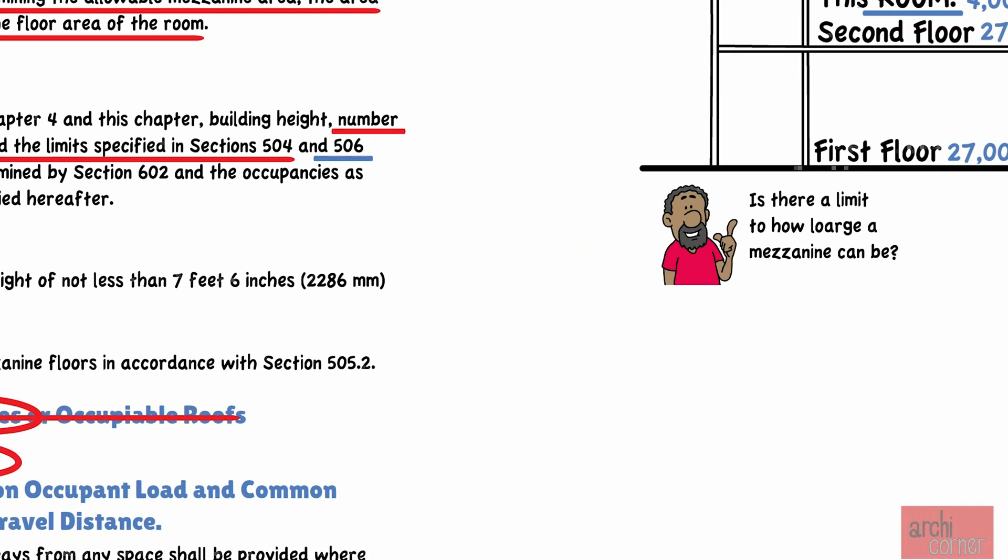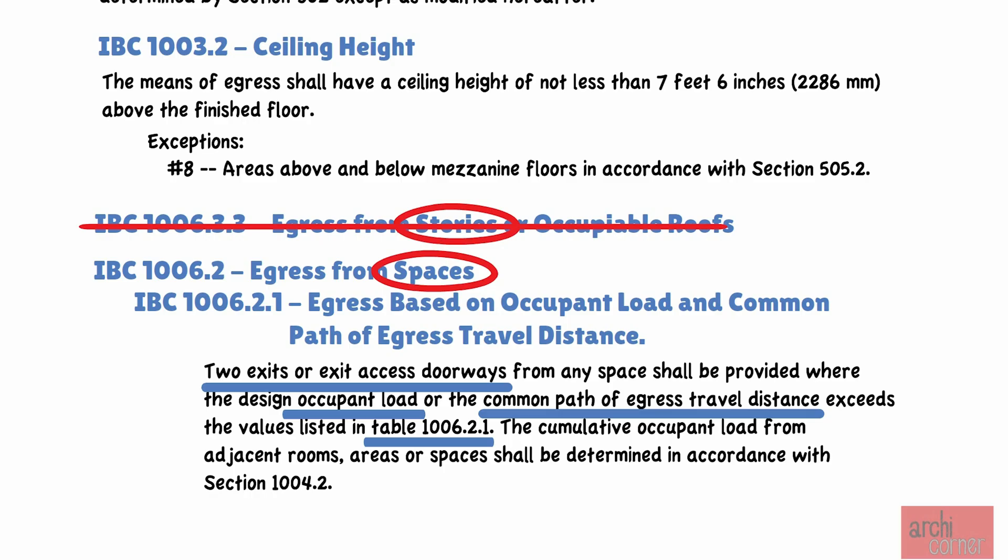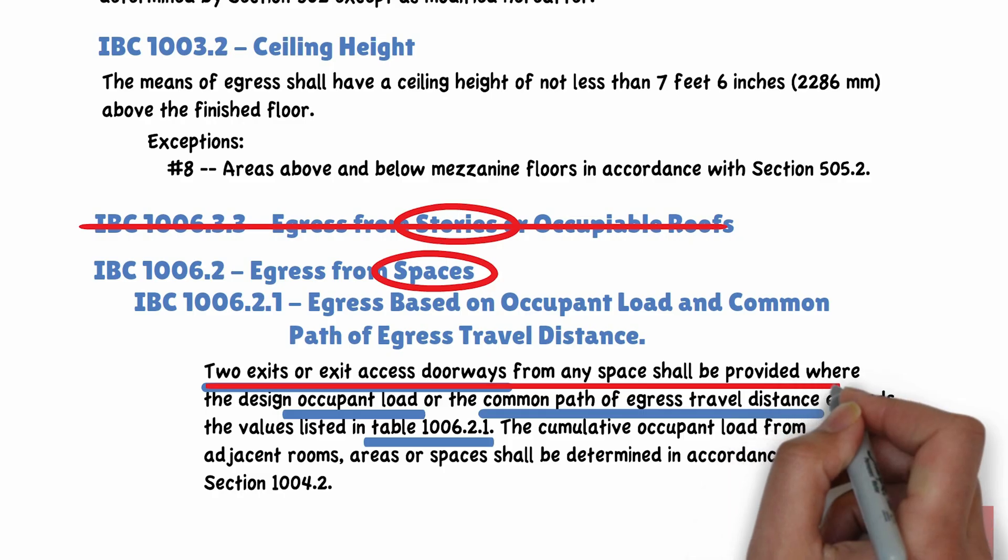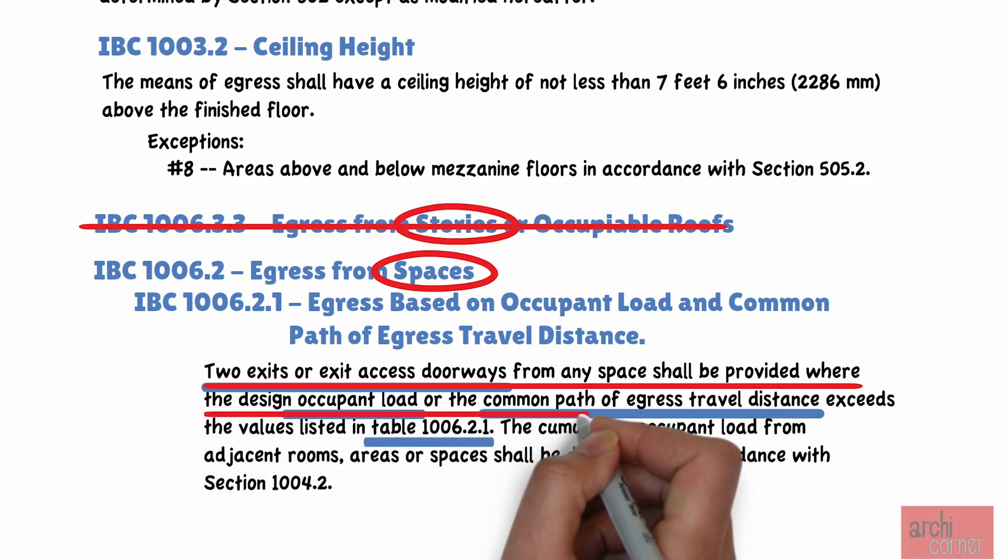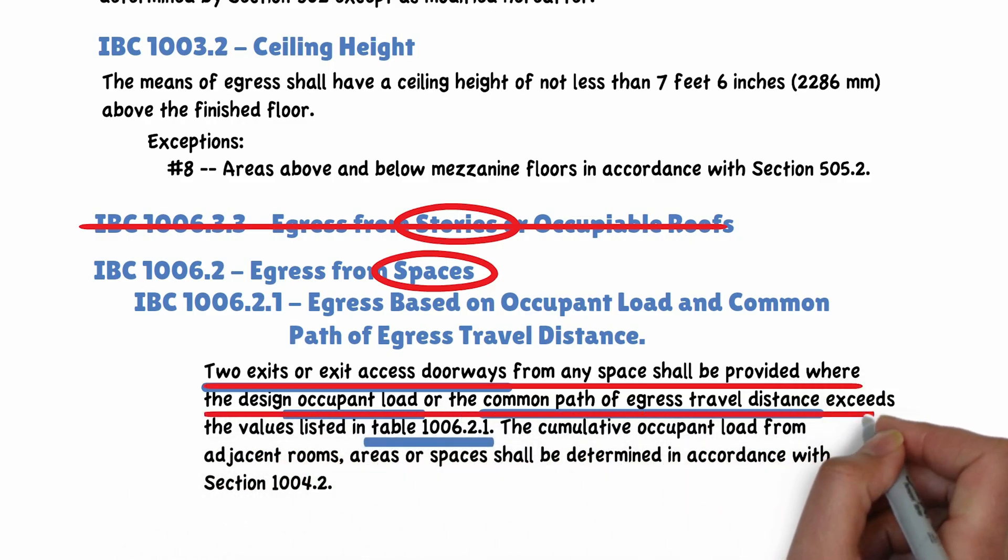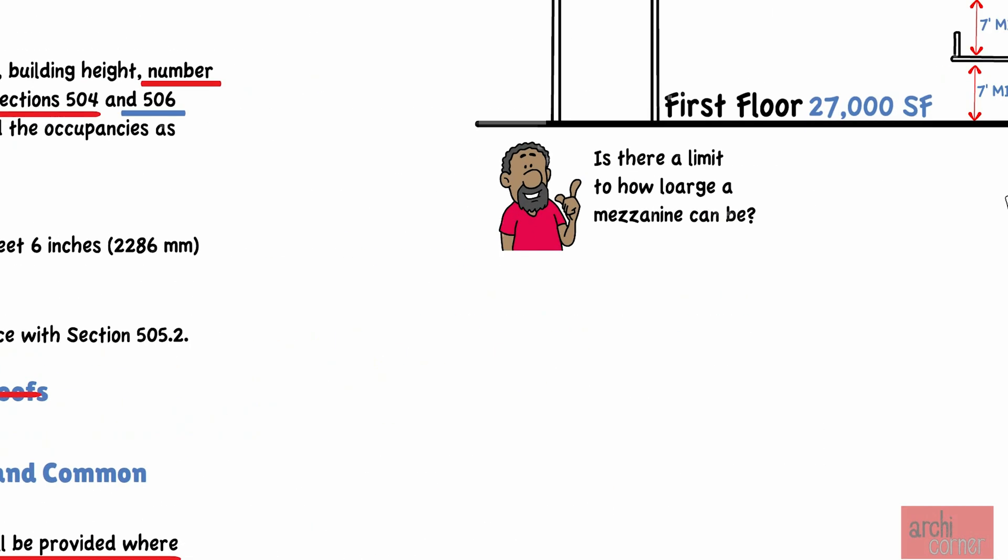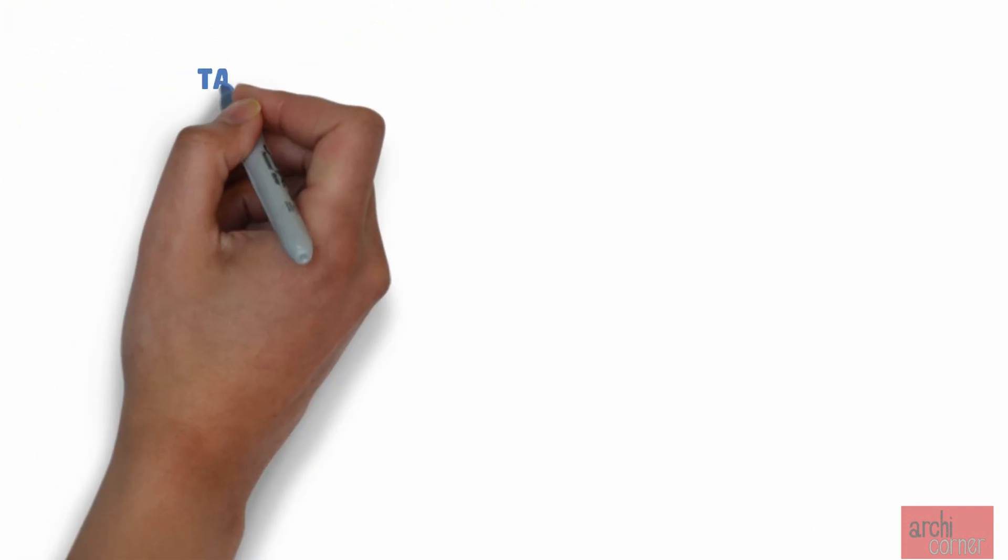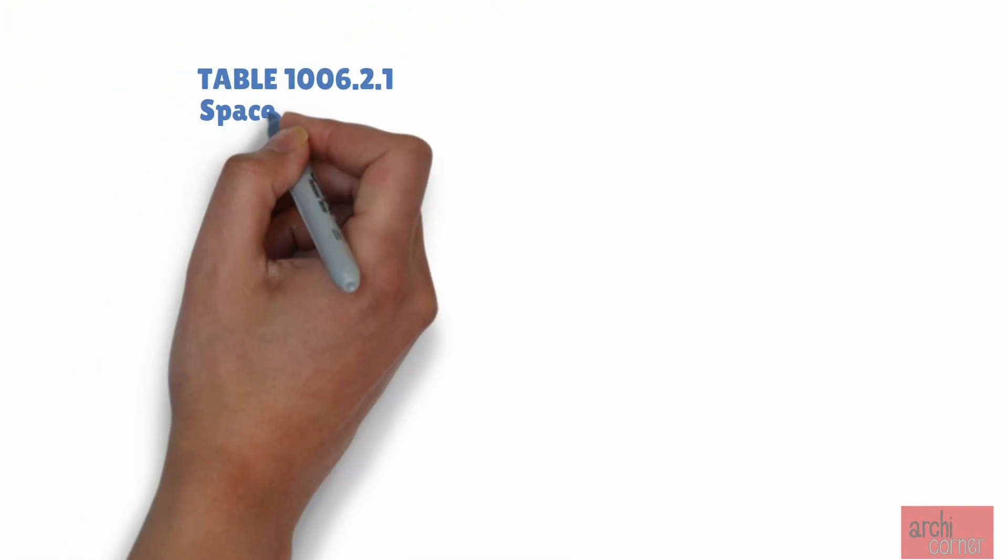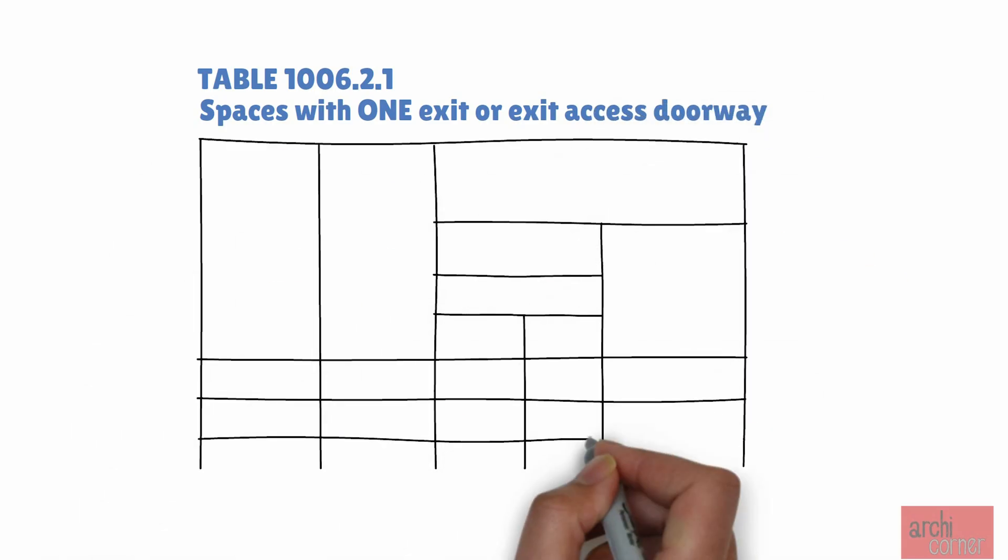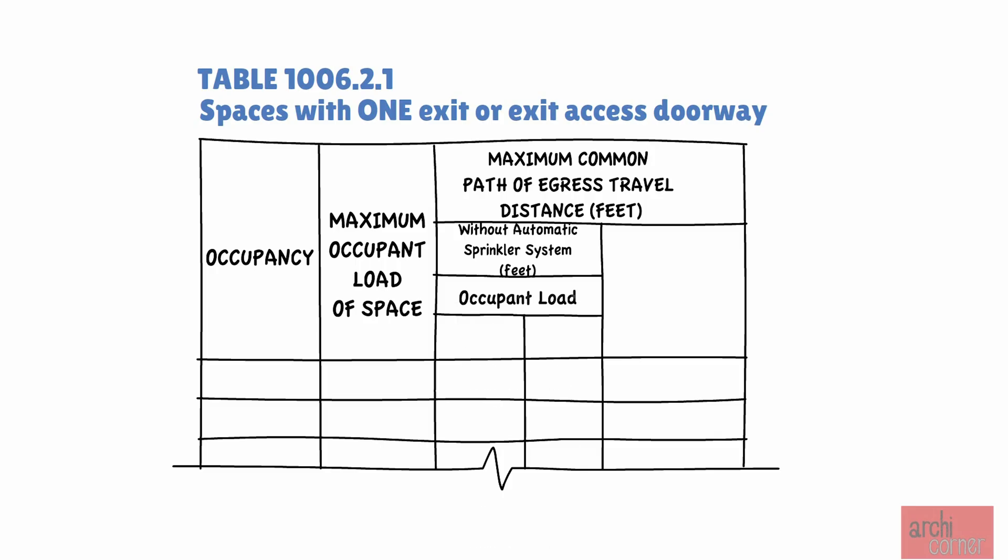As you may recall, when we looked at code section 1006.2.1, it stated that two exits or exit access doorways from any space shall be provided where the Design Occupant Load or the Common Path of Egress Travel Distance exceeds the values listed in table 1006.2.1. Because of that, let's take a look at this table to see if we need two exits. This table is a little misleading as it is titled Spaces with One Exit or Exit Access Doorway. In other words, what this table is really showing us is the maximums allowed for spaces with one exit.